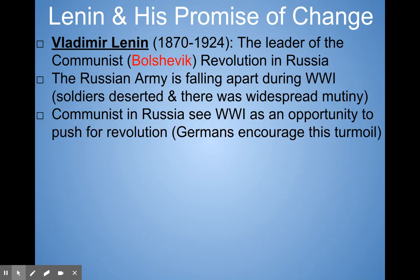Communists in Russia saw World War I as an opportunity to push for revolution, and the Germans encouraged this turmoil. There was a secret German plot — when they saw the problems in Russia, they actually went to Vladimir Lenin, who had been kicked out of Russia before World War I for causing trouble and was living in neutral Switzerland. The Germans said to Lenin: there's trouble in Russia, we know you want to get back, so we're going to help you get into Russia, stir up problems, and we'll give you money and supplies. Lenin became Germany's secret weapon to go back to Russia and start trouble.